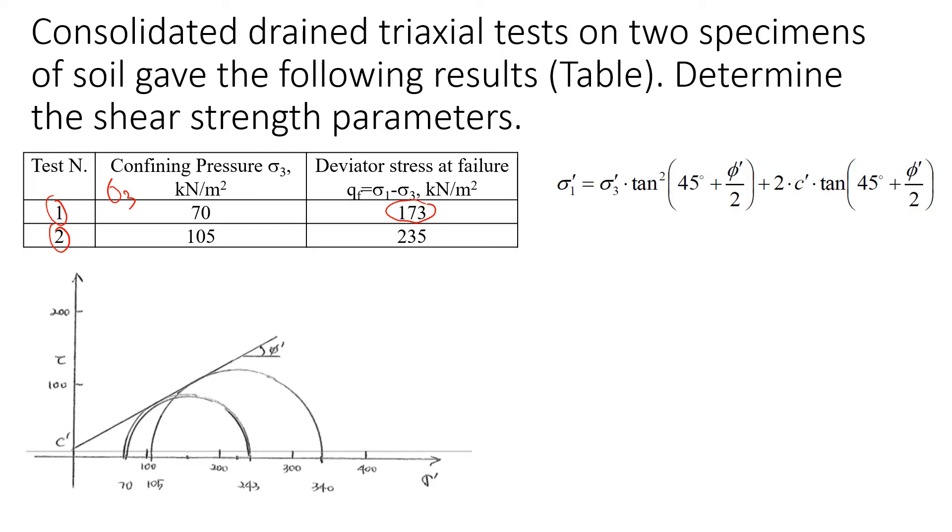The simple way is to draw two Mohr circles. In this case we need to know sigma 3, which is given here in this column, and then we need to find sigma 1, which is sigma 3 plus the deviator stress.